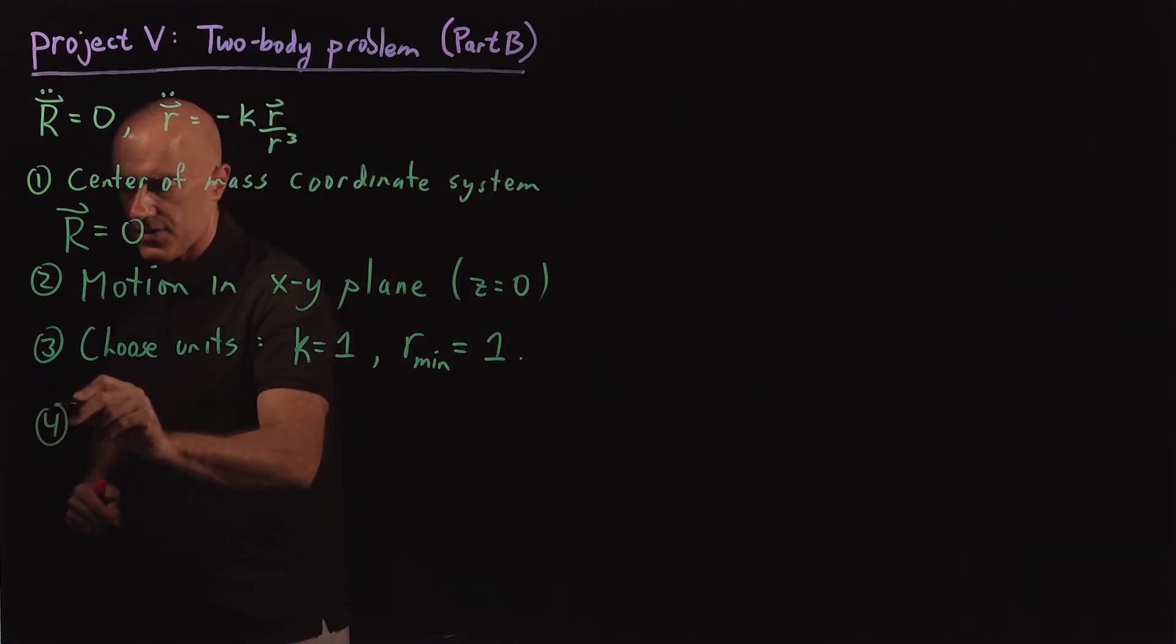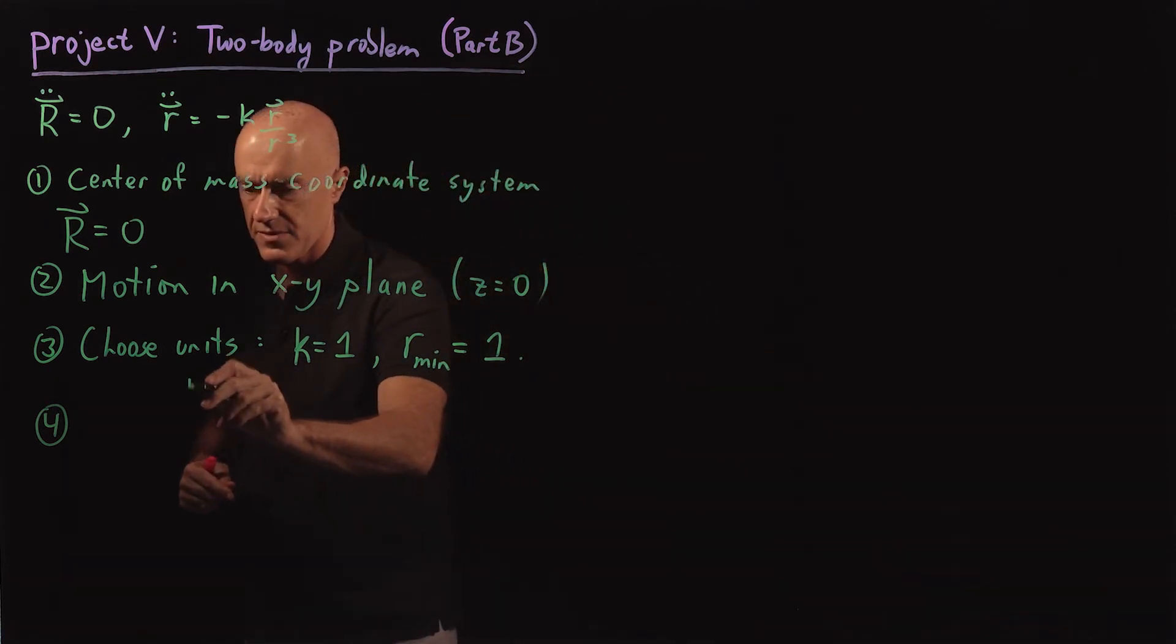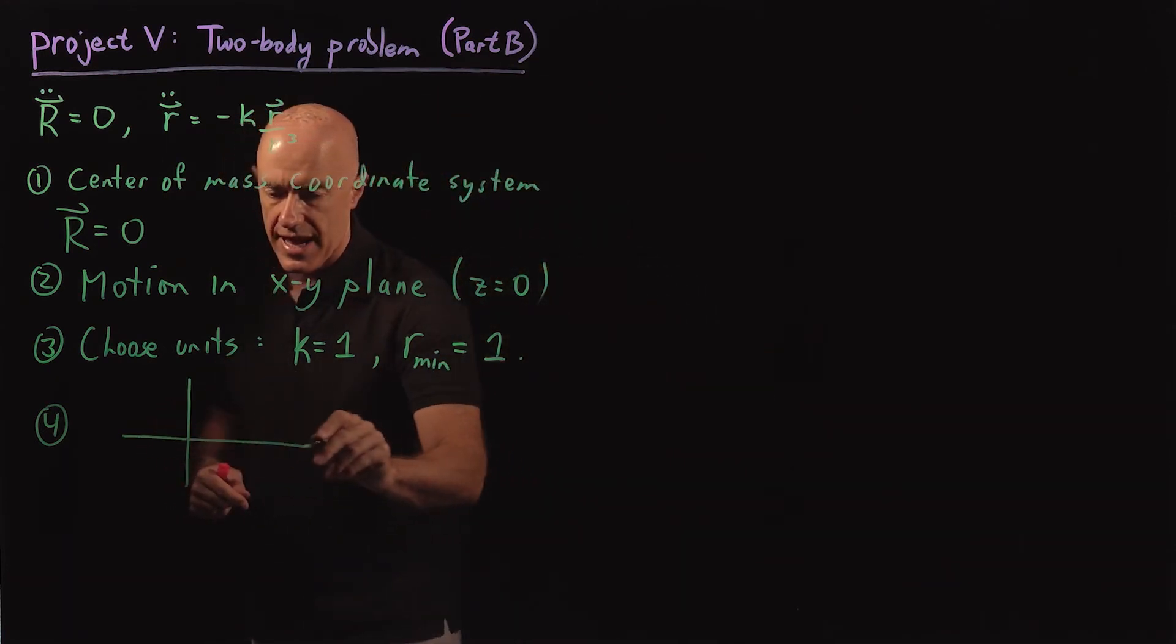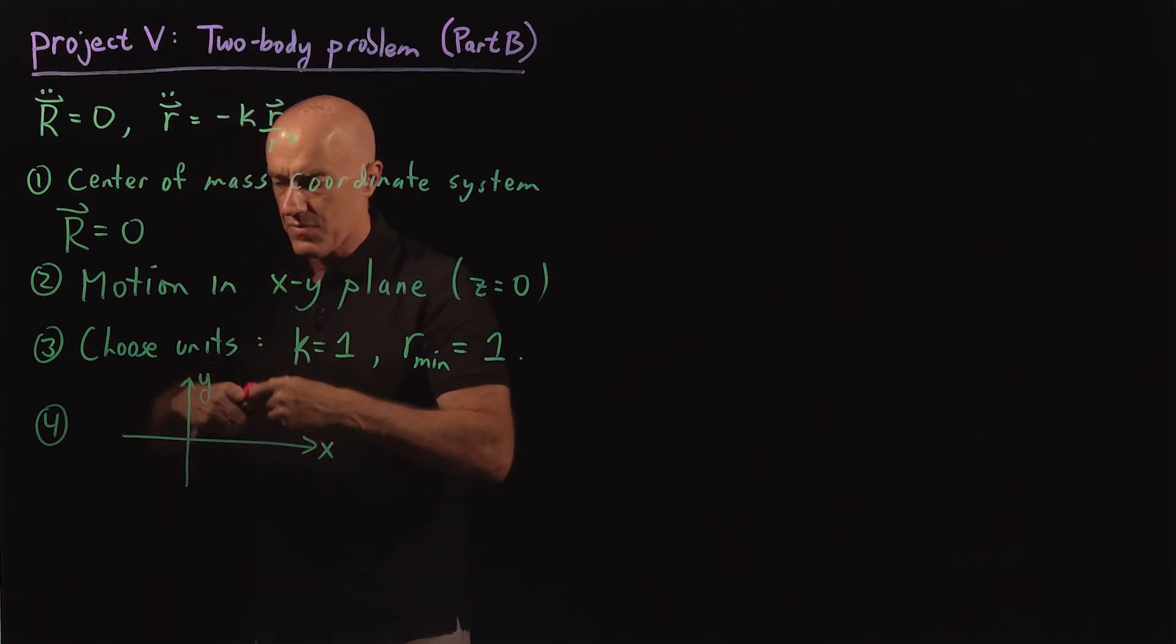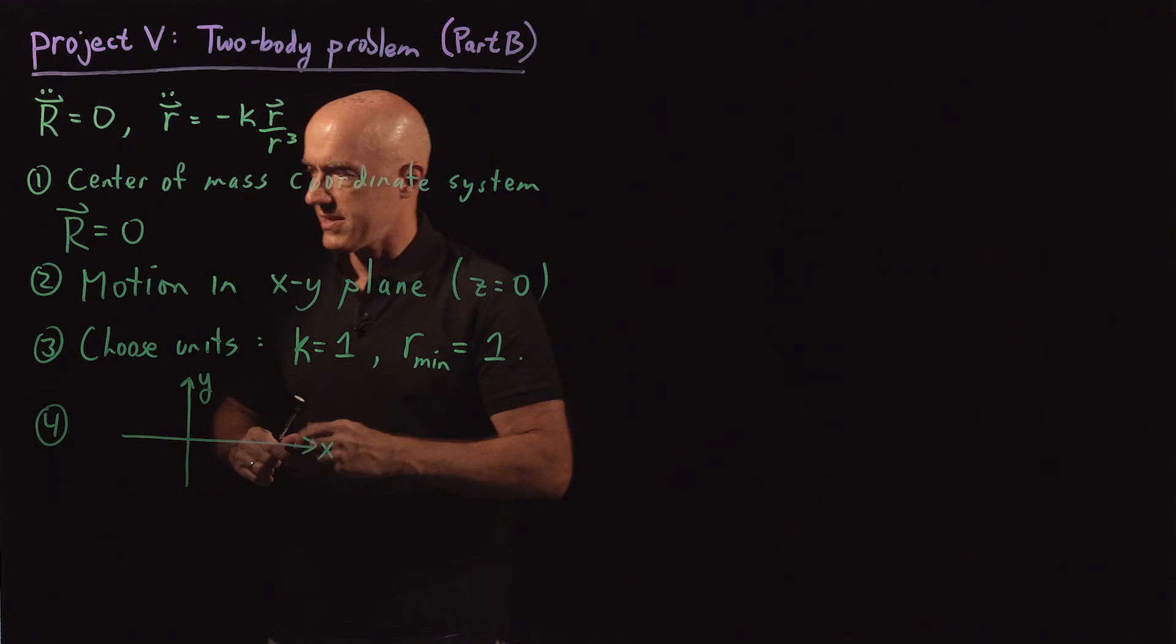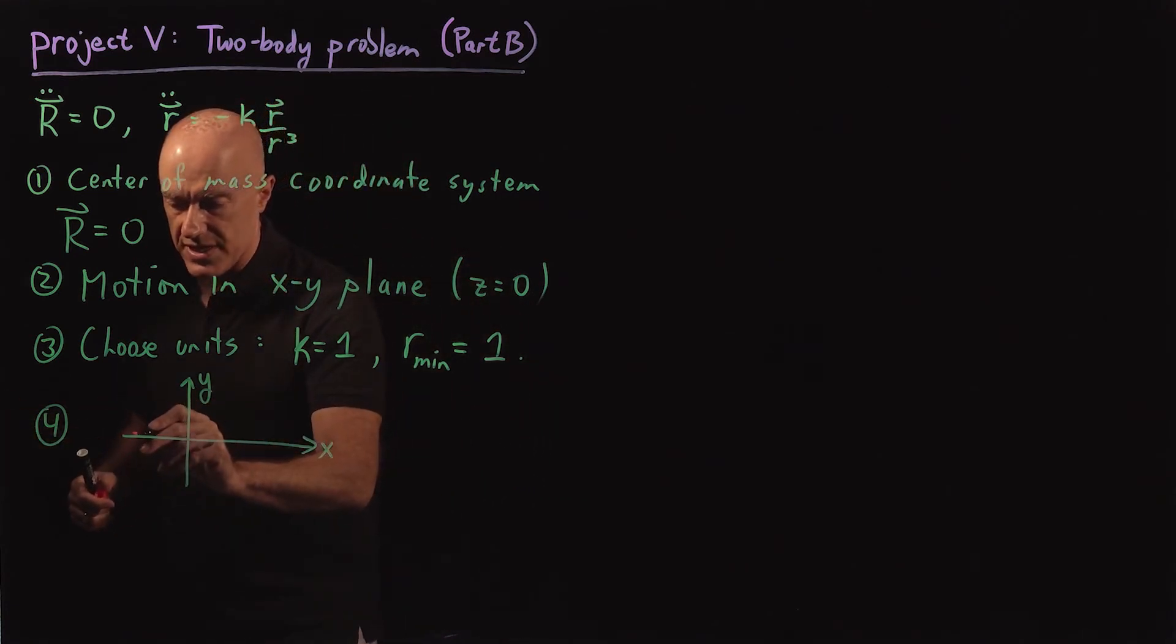Fourth is to set up the orientation of the coordinate system. So we have our xy coordinate system. I'm going to set up the orientation of the coordinate system. So say at t equals zero, our mass is sitting here.